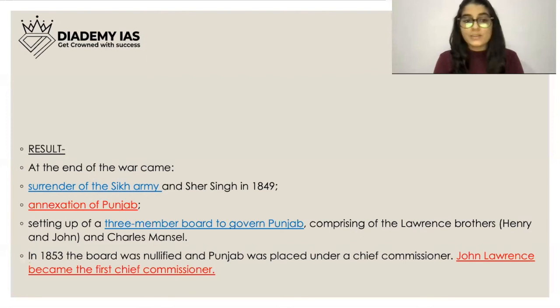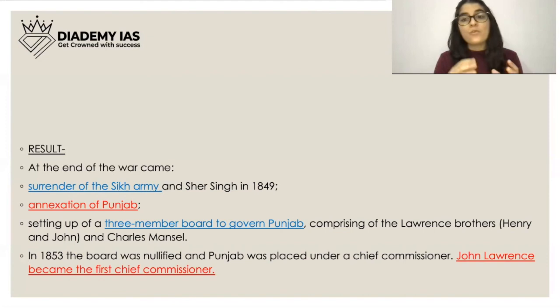In 1853, the board was nullified and Punjab was placed under a Chief Commissioner. John Lawrence became the first Chief Commissioner of Punjab.